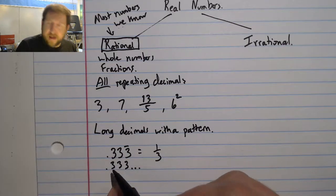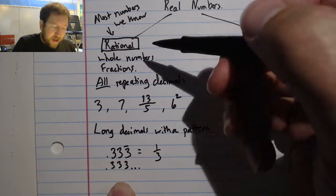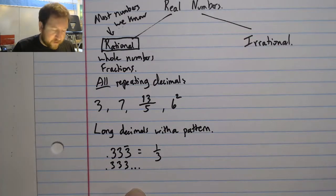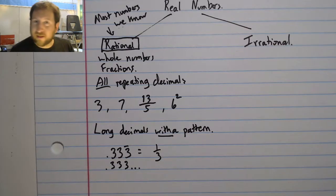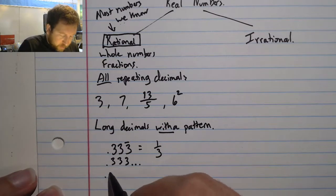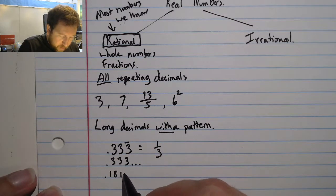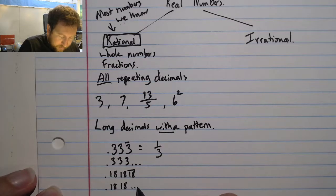I can also write this number as 0.333 with my ellipses after it. That just means it goes on forever, and I can see that there's already a pattern established so I know that these threes are going to continue onward. This would fit in with my rational numbers because I can see that it has a pattern. The pattern is very important and very key.